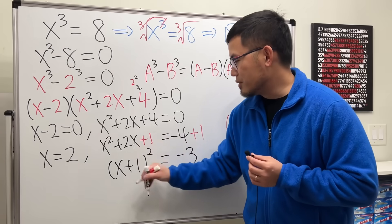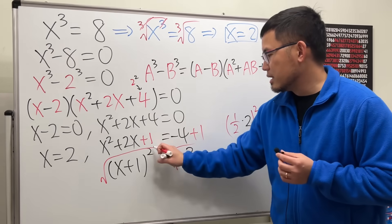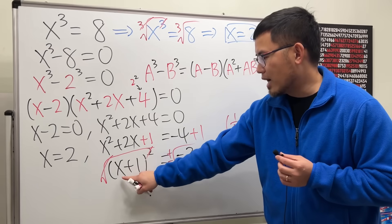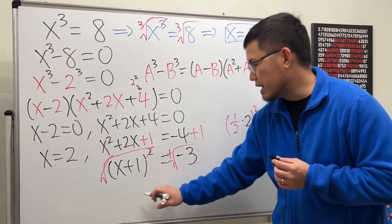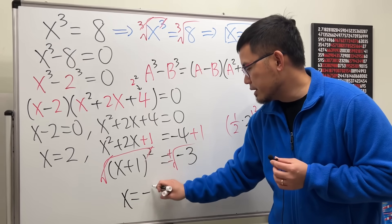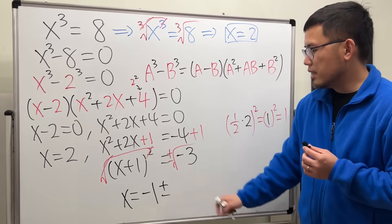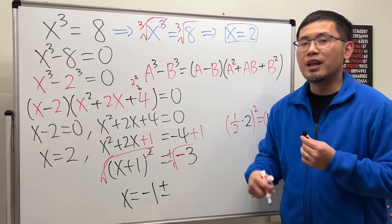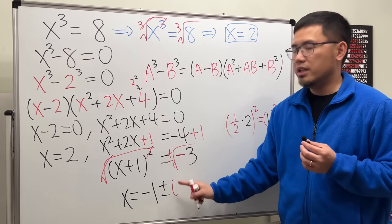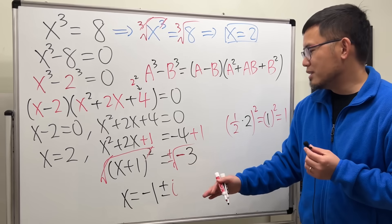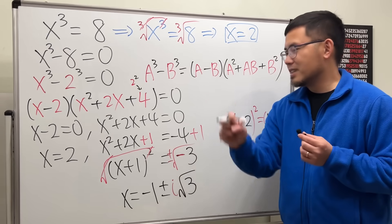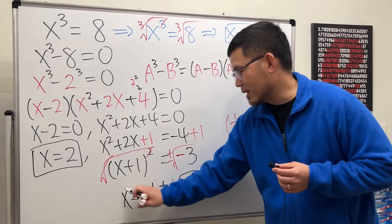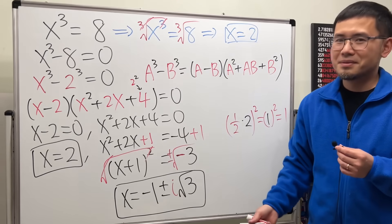Now take the square root of both sides — they cancel on the left — and attach plus or minus on the right. We get x plus 1 equals plus or minus the square root of negative 3. Moving the 1 over: x equals negative 1 plus or minus the square root of negative 3. Since we have a negative under the square root, that becomes i times the square root of 3. So altogether we have three solutions.